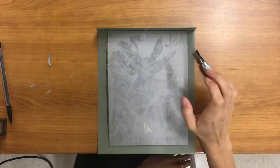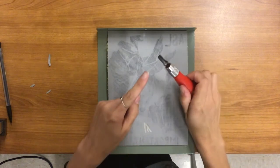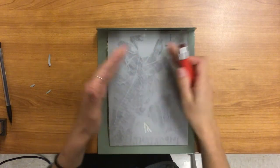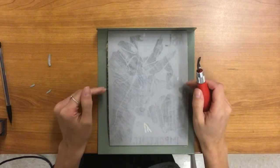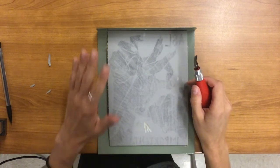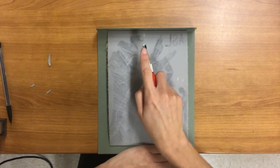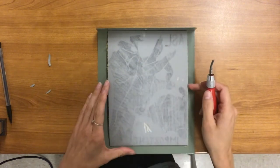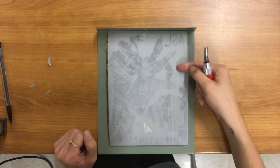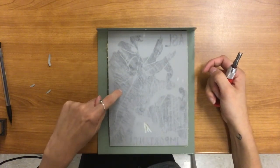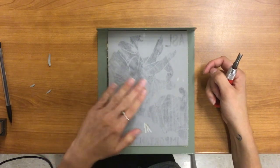So your main things to remember: make sure you switch out the tip depending on what type of line or detail you're going to carve away. Always make sure your hand is behind the direction of the carving tool and make sure that you only carve away what's light gray. If it's black, leave it because that's what you want to stay intact for when you print.